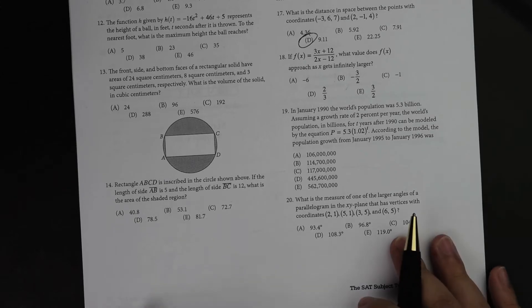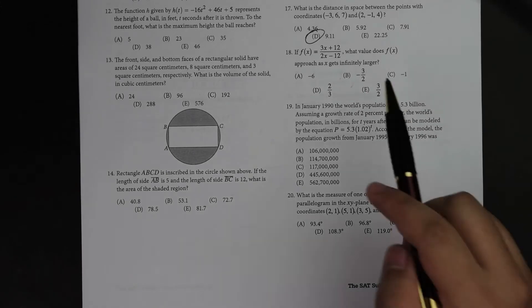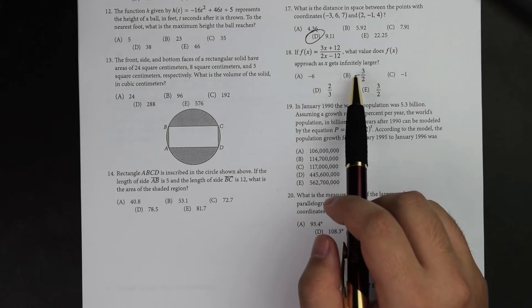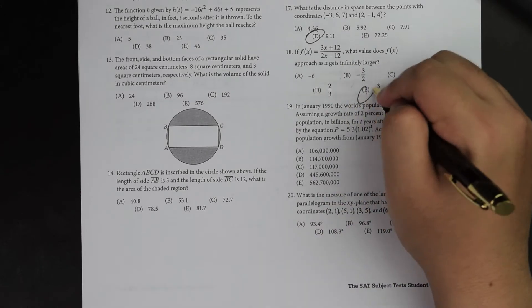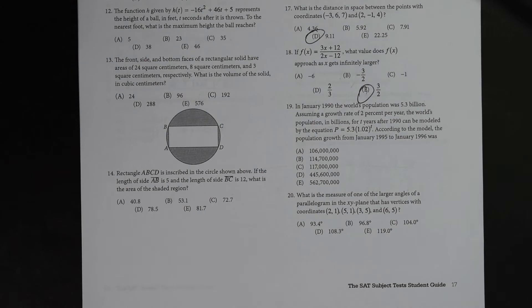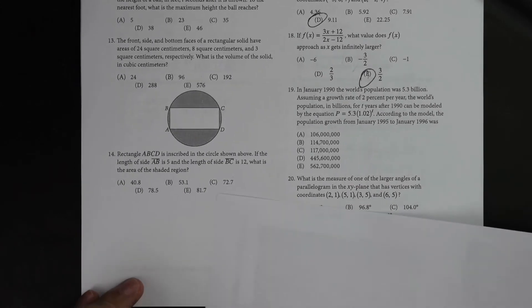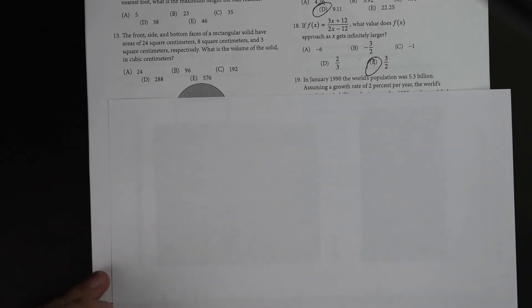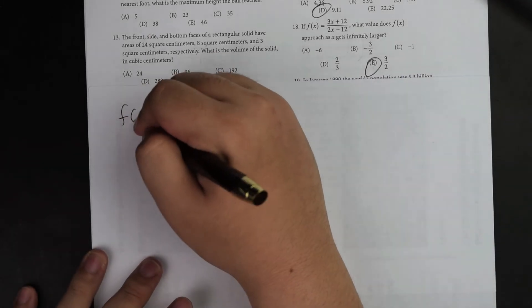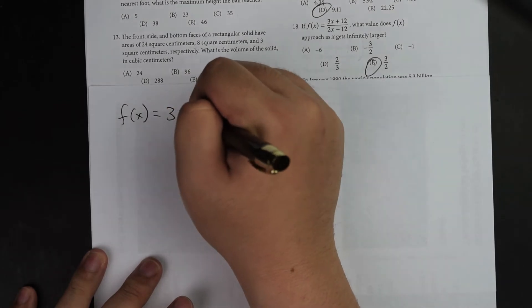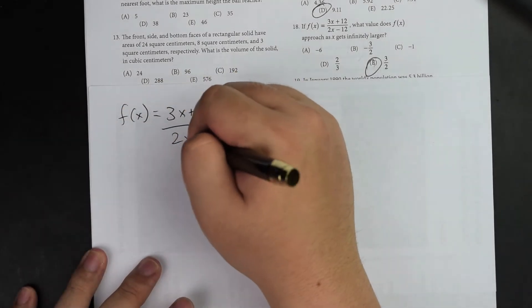And so just to continue on to the next question, for number 18. What does f(x) approach as x gets infinitely larger? So it's going to be E. Okay, so for number 18, I was able to do this question real quickly. And the part is that for this type of question, actually, there are multiple ways to do this question. There is a longer way to do this than the shorter way. And I'm going to show you both ways real quick, just in case you forget the faster way method. So the longer way is literally when I take f of x equals to 3x plus 12 over 2x minus 12.